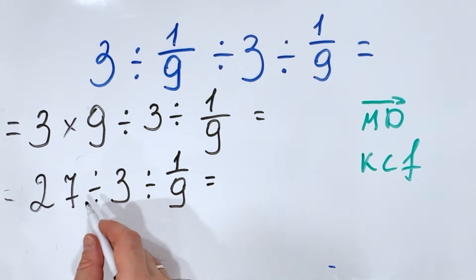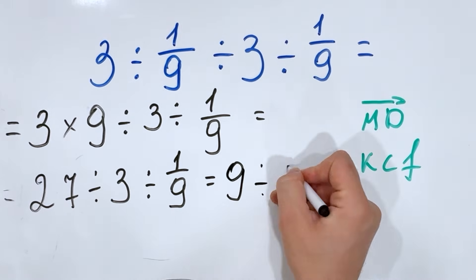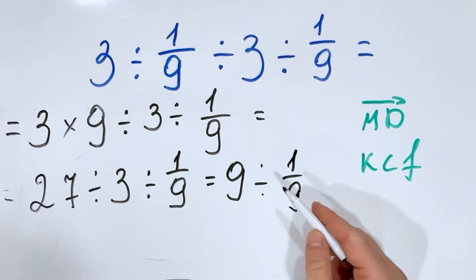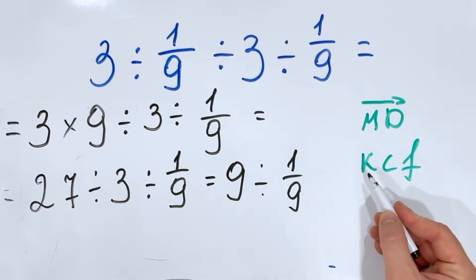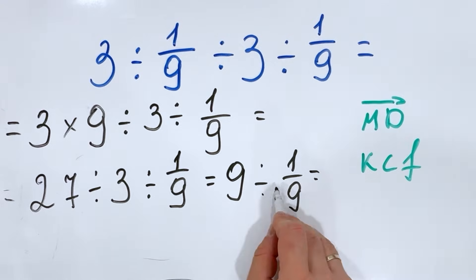27 divided by 3 is 9 divided by 1 over 9. And here again, to not get confused, we apply the KCF rule which means Keep the first, Change the sign, and Flip the second.